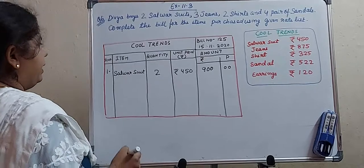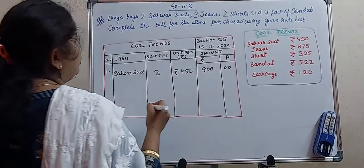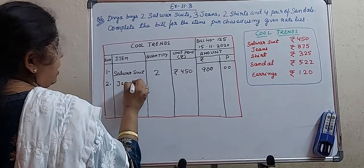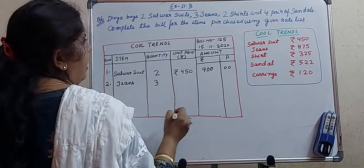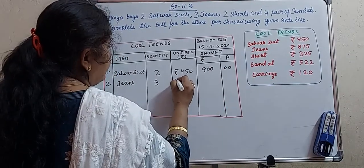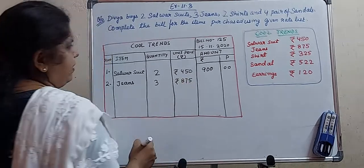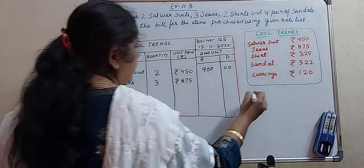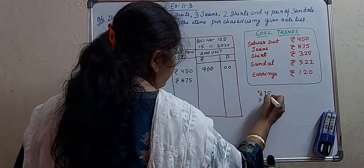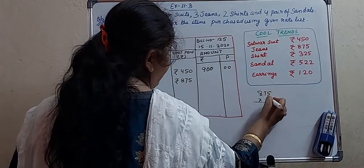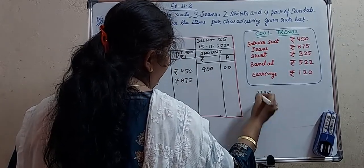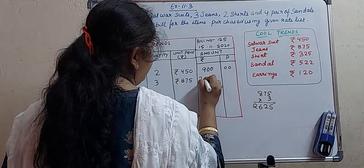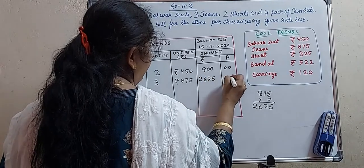The next item she is purchasing is jeans — item number 2. How many jeans? 3 jeans, and the rate is ₹875. Let us work out the amount: 875 × 3. 5 × 3 = 15, carry 1. 7 × 3 = 21 + 1 = 22, carry 2. 8 × 3 = 24 + 2 = 26. So the amount is ₹2625.00.